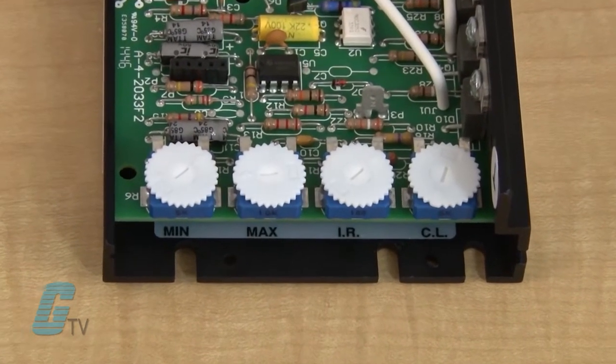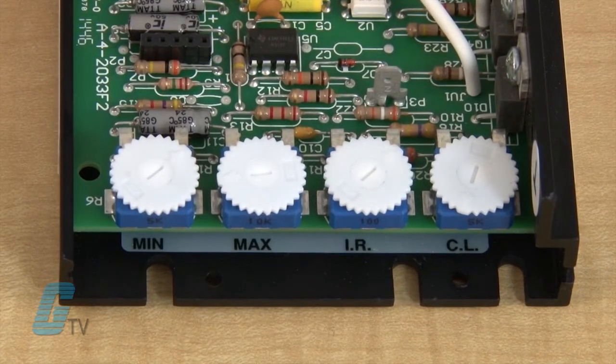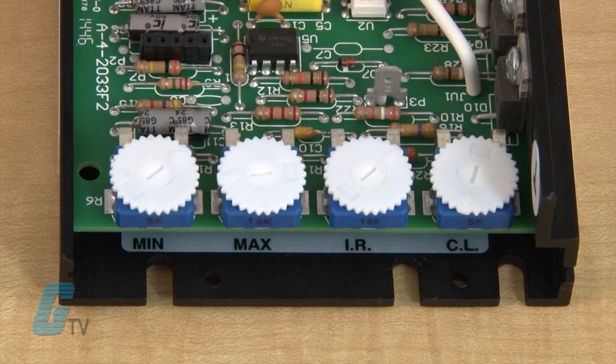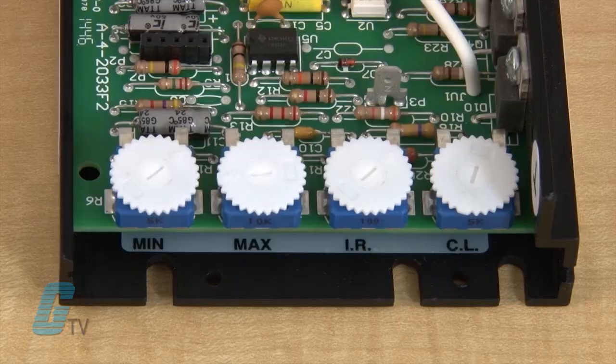Some additional controls include the trim pots on the other side. The minimum and maximum trim pot controls allow for adjustments to the motor speed when the speed pot is at zero or at its peak.